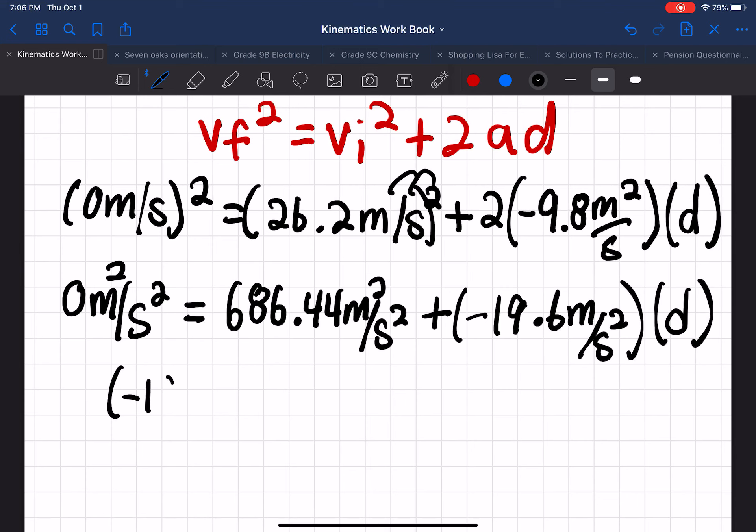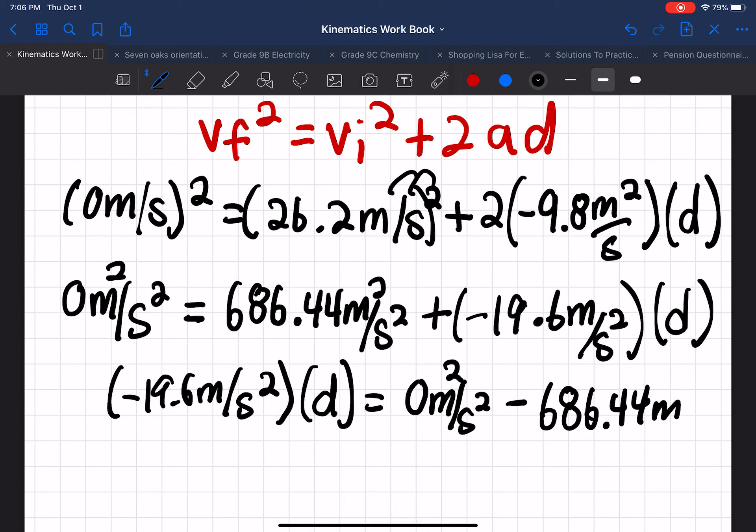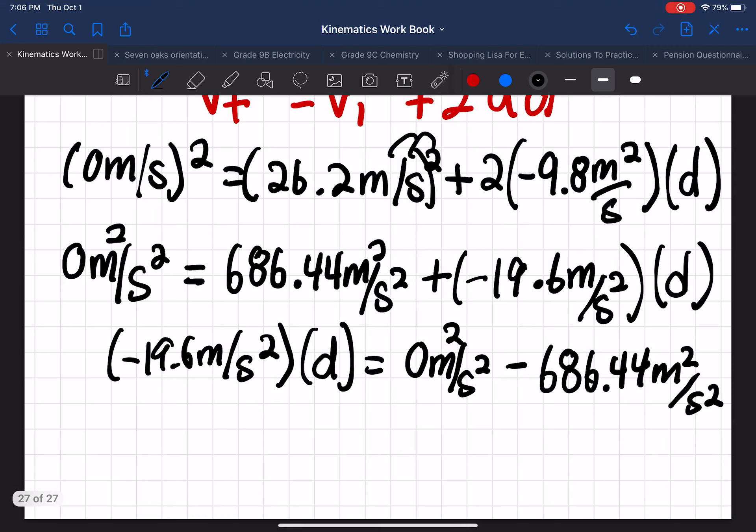And now we're continuing to isolate. So we move over some variables. So over here, we're going to have negative 19.6 meters per second squared, multiplied by d equals 0 meters per second squared minus 686.44 meters squared per second squared. And now, so that minused over.